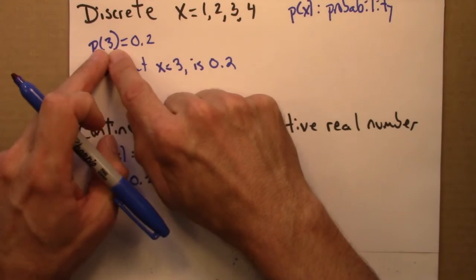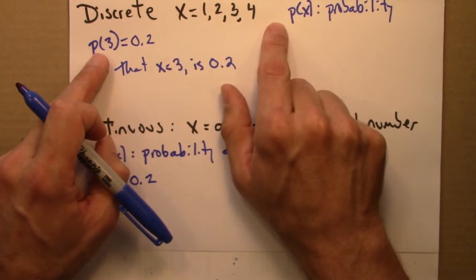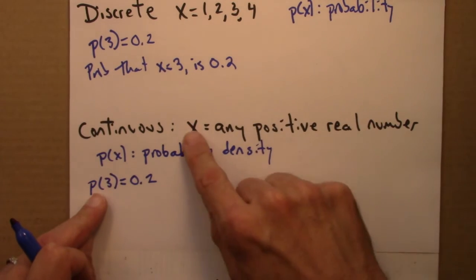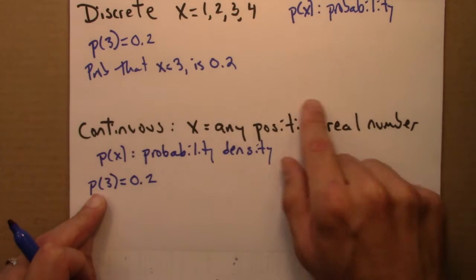Here, 3 is one outcome among four possibilities. Here, 3 is one outcome among an infinite number. In fact, an uncountably infinite number.